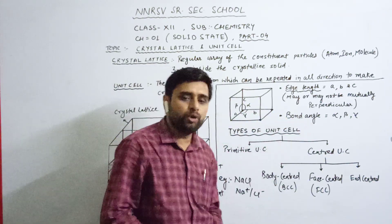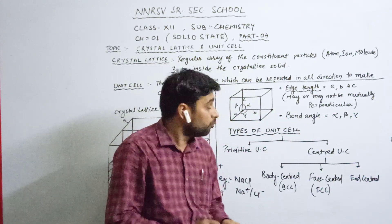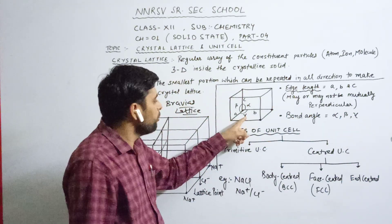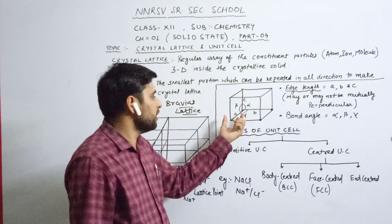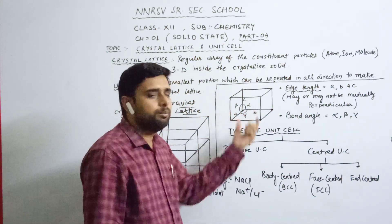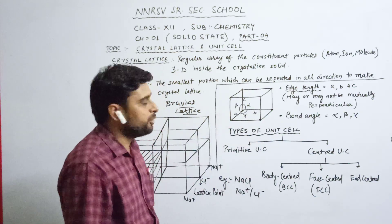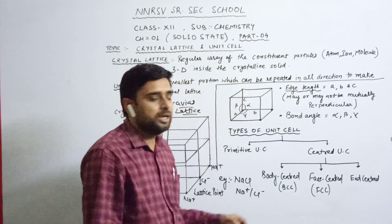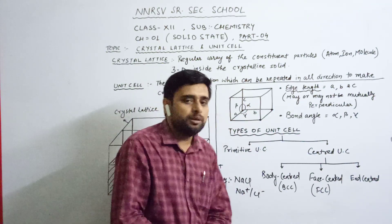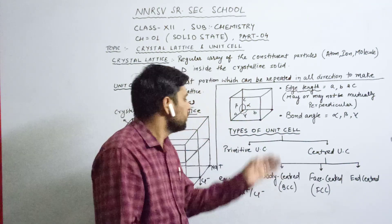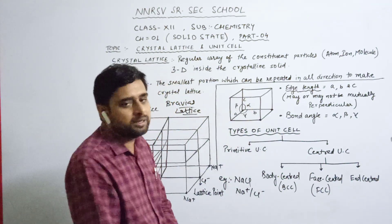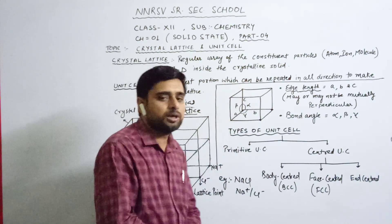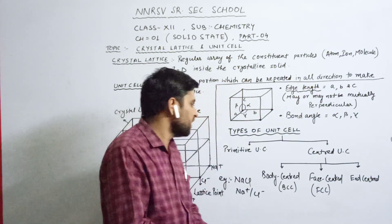Another parameter is bond angle: alpha, beta, and gamma. Alpha is the bond angle between edge lengths A and B. Beta is present between edge lengths A and C. And gamma is the bond angle between edge lengths B and C. These are the basic parameters of the unit cell.